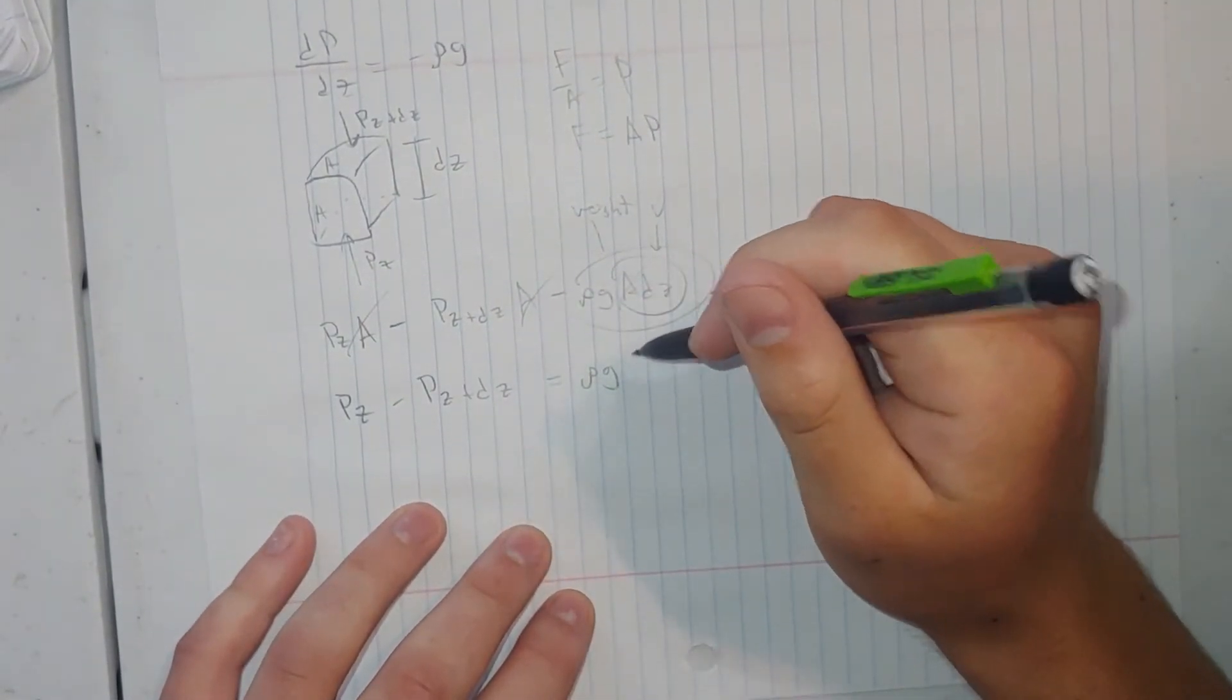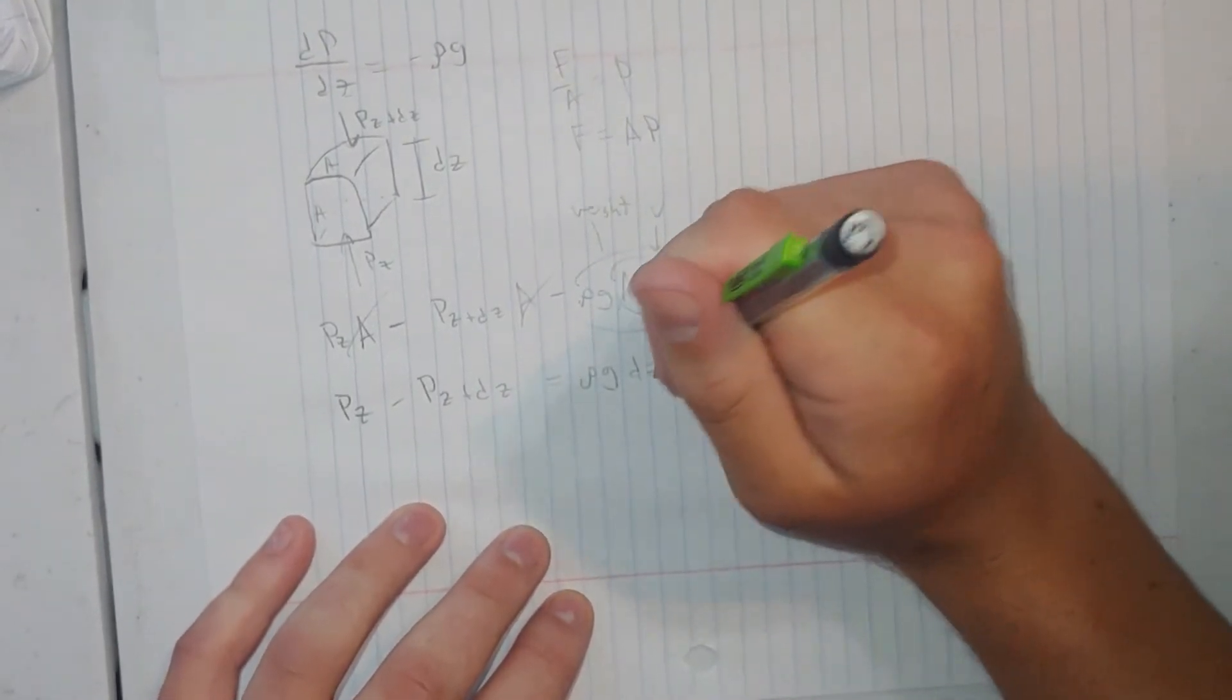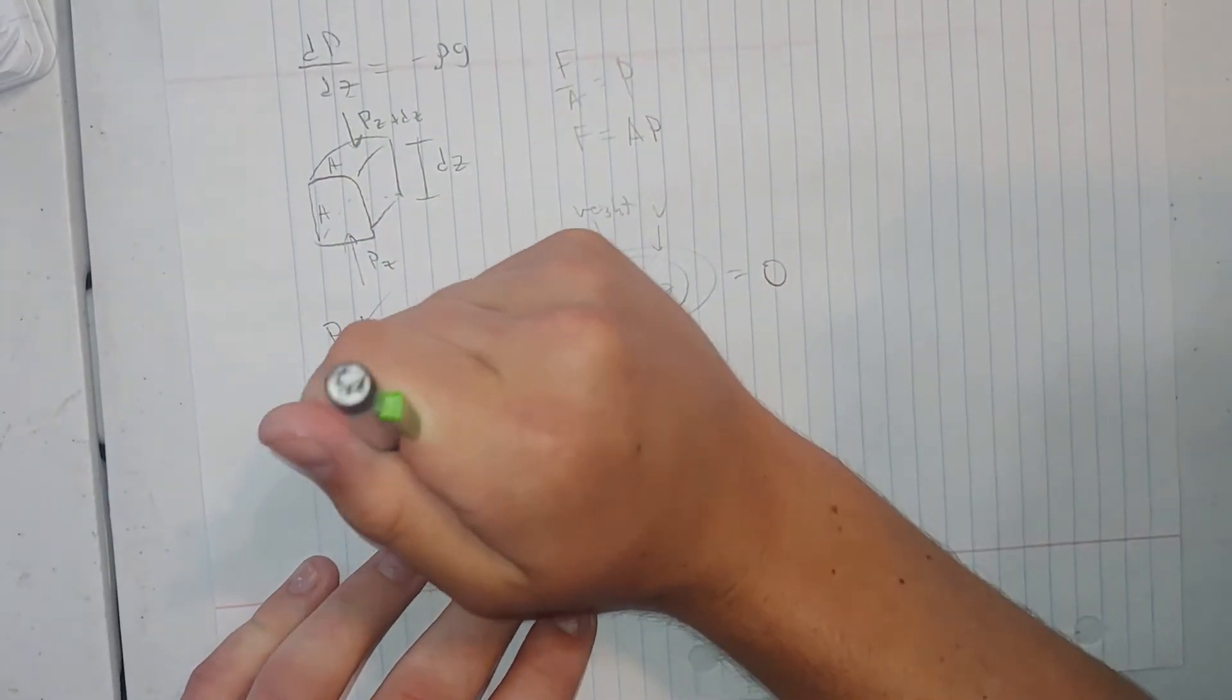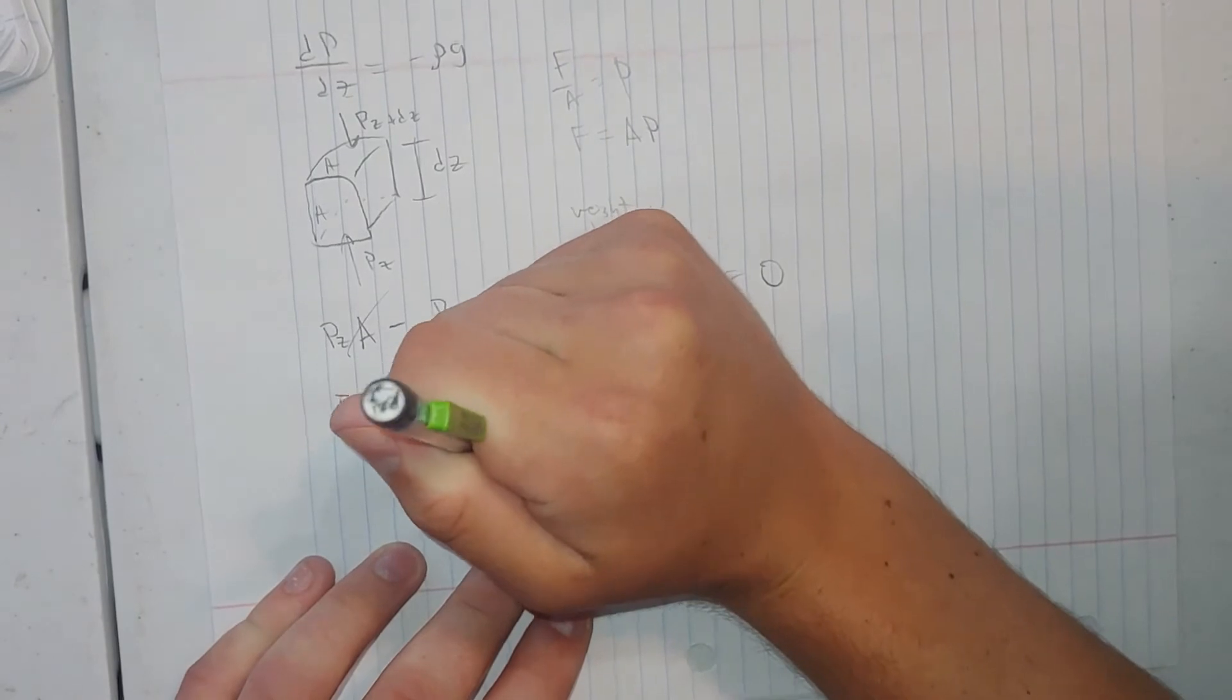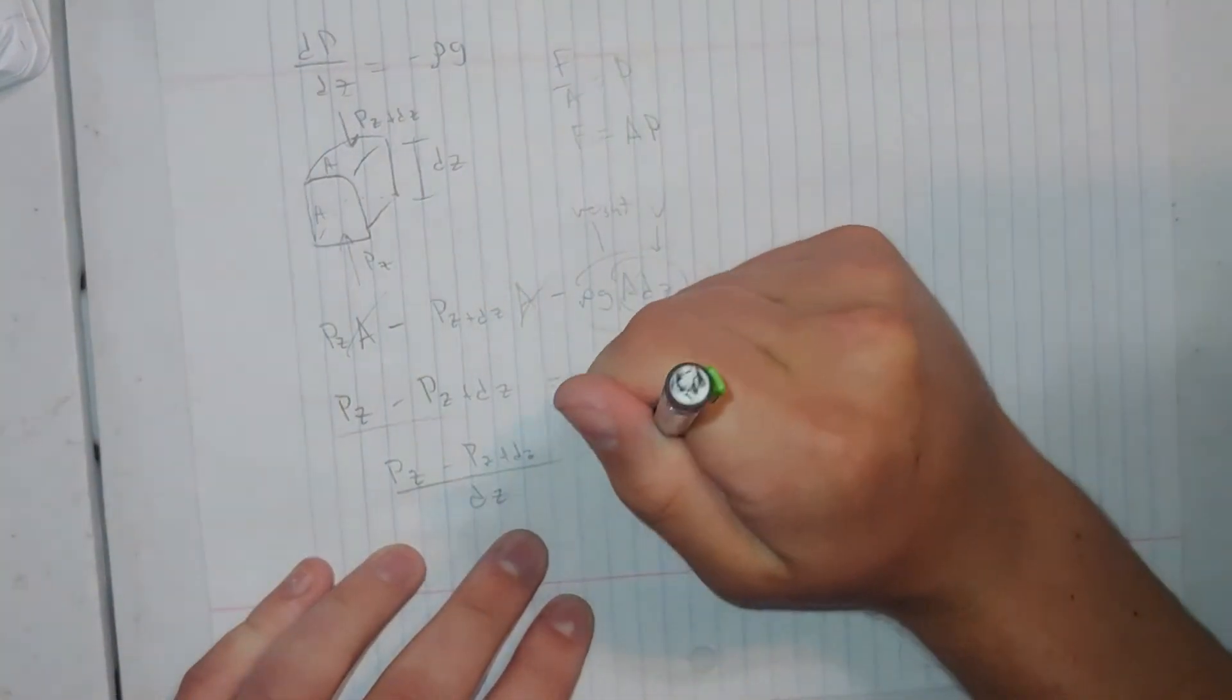So now we're going to divide by dz over each of these. So that leaves us with (pz minus p(z+dz)) over dz equals ρg.